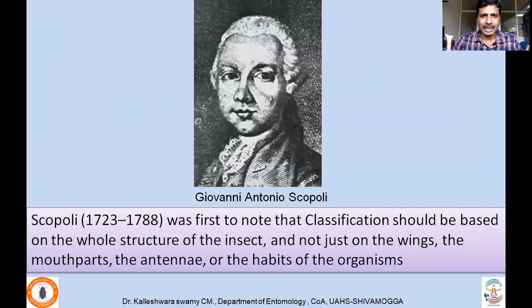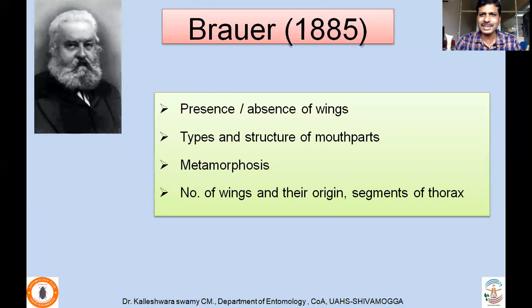By that time, people tried to understand that classification should not be based on a single character. It was first recognized by Giovanni Antonio Scopoli, who was the first to note that classification should be based on the whole structure of the insect and not just on the wings, the mouthparts, the antennae, or the habits of organisms. All characters should be used for classification. As a result of that, Brauer in 1885 used different characters for classification, considering presence or absence of wings, types and structure of mouthparts, metamorphosis, number of wings and their origin, and segments of thorax.